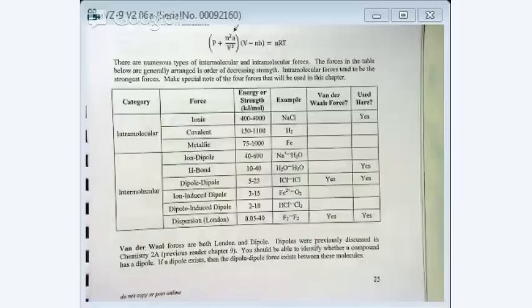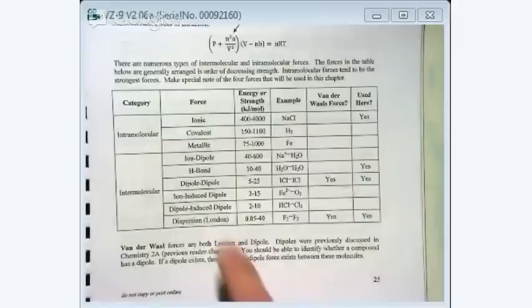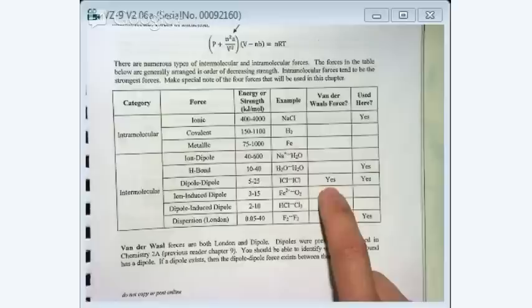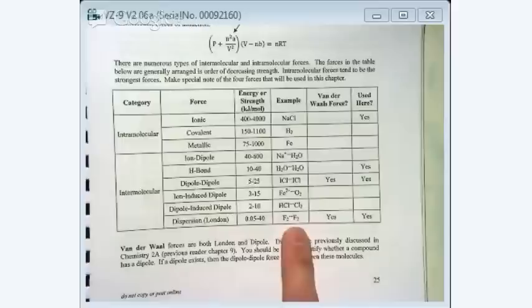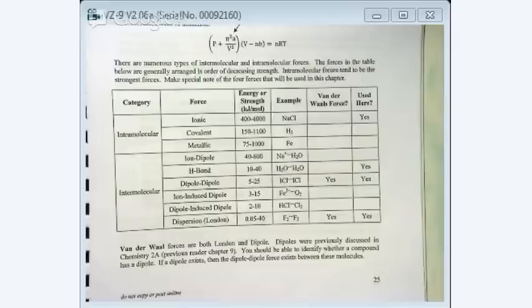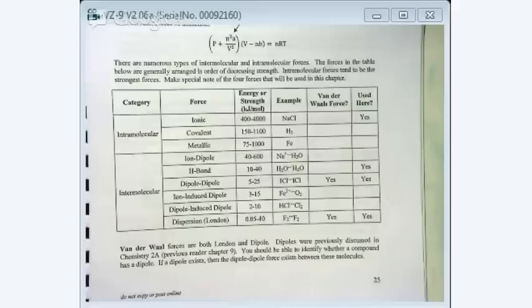Now let's turn our attention to the intermolecular forces. There are a bunch of different kinds listed here — this is between two different entities, two different species. You can have the ion-dipole, which we won't talk about much. We will talk about H-bonding, dipole-dipole (same polarity as in 2A), which is a Van der Waals force. There's also ion-induced dipole, dipole-induced dipole, and dispersion or London force — also a Van der Waals force. These are in order of strength: strongest on top, weakest on the bottom.